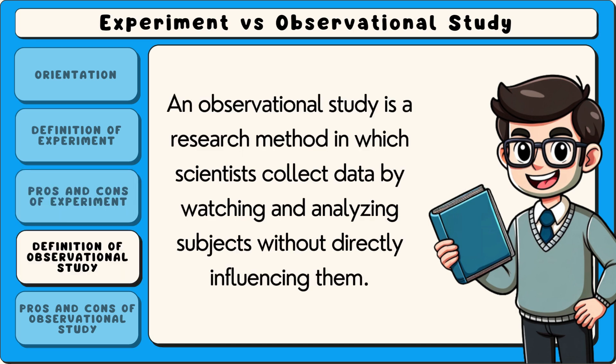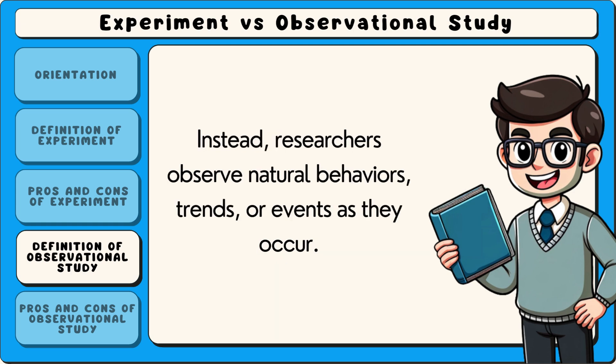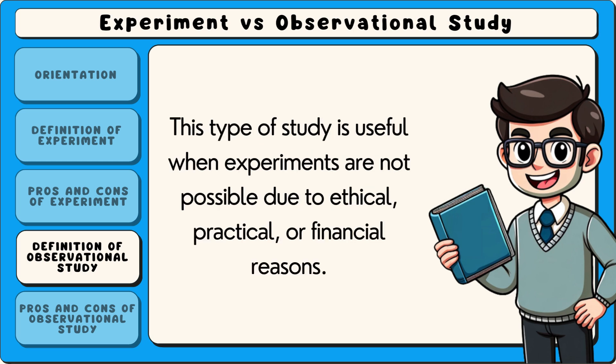Now let's look at the definition of an observational study. An observational study is a research method in which scientists collect data by watching and analysing subjects without directly influencing them. Unlike experiments, observational studies do not involve assigning treatments or controlling variables. Instead, researchers observe natural behaviours, trends, or events as they occur. This type of study is useful when experiments are not possible due to ethical, practical, or financial reasons.